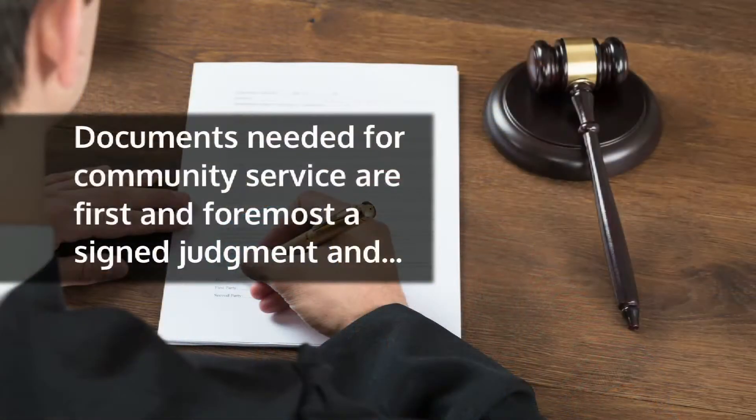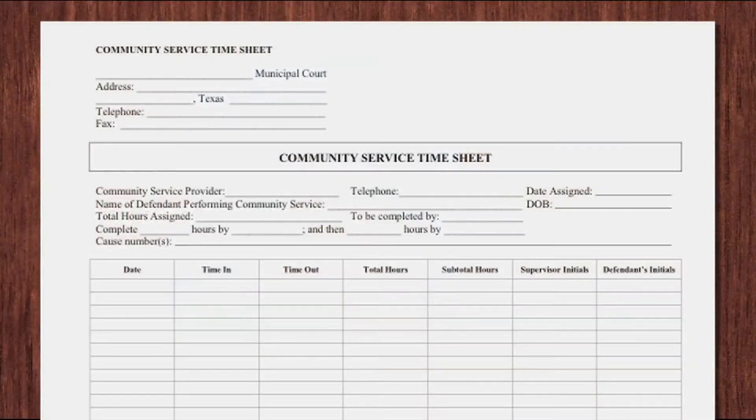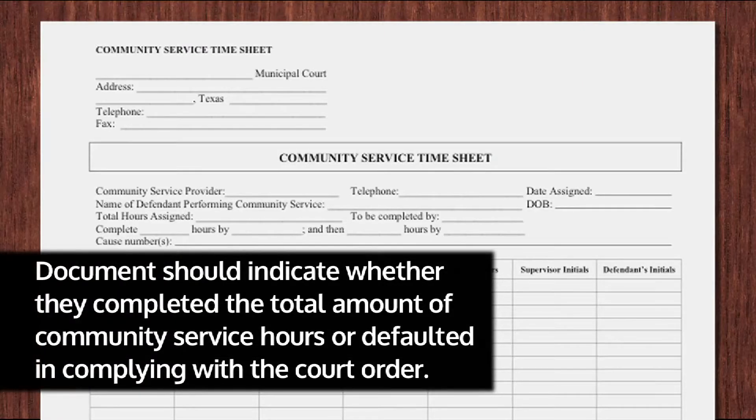In a case involving community service, the documentation needed is first and foremost a signed judgment. The defendant should have a form to be signed and completed by the nonprofit agency that supervised the defendant's community service. The actual hours performed should be documented, indicating whether they completed the total amount of community service hours or whether they defaulted. This form should be presented back to the court, as it is the mechanism by which the defendant documents completion or default. The court then uses this document to either close out the case or determine the balance due on the case.